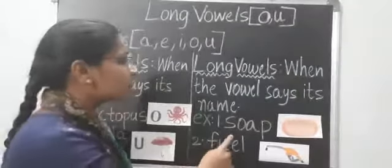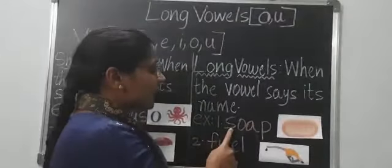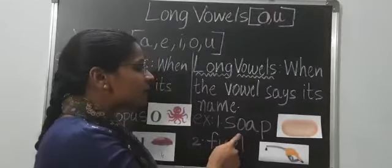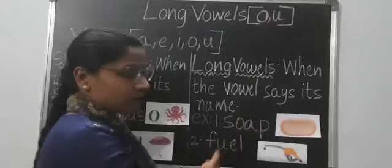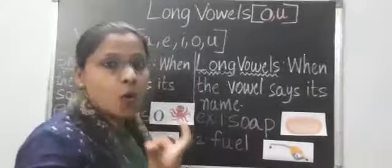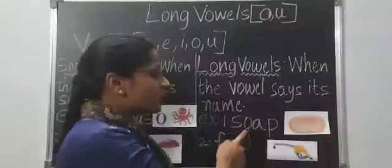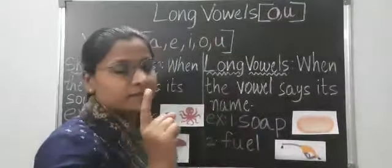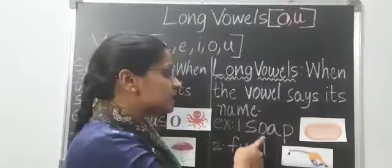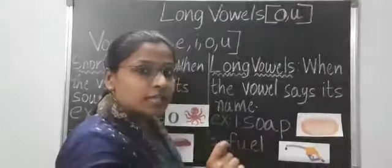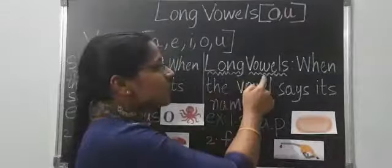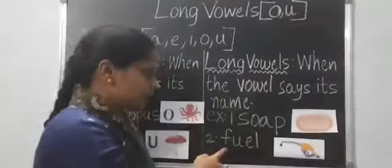Let's see an example here. See — soap. When you are saying soap, you can see how many vowels we have: O, A — two vowels. So when you are pronouncing the word soap, only you can hear the O sound, and it is also the name of a letter, not just a sound. So it is a long vowel. Okay children.